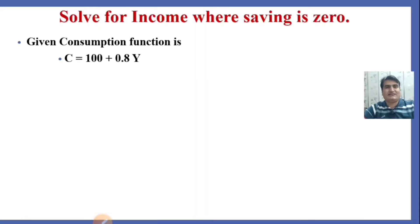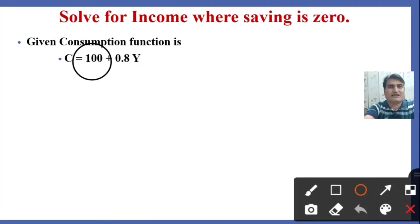Given consumption function is C equals 100 plus 0.8Y. This is the autonomous consumption and this is the marginal propensity to consume.